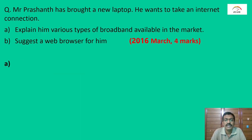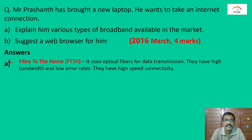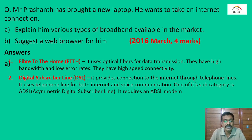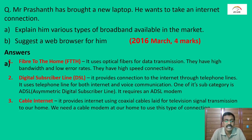Mr. Prashant has brought a new laptop and wants an internet connection. Explain various types of broadband available. First is Fiber to the Home (FTTH), which uses optical fiber for high bandwidth data transmission. Second is DSL — Digital Subscriber Line — an internet connection over a telephone line. Third is Cable Internet, which uses a Coaxial Cable. Suggested browsers include Mozilla Firefox, Google Chrome, and Opera.